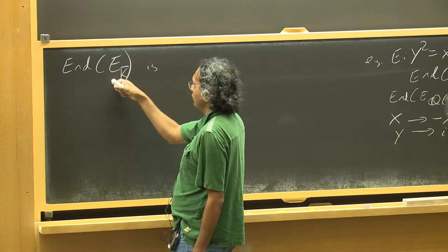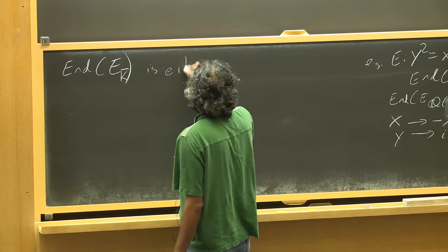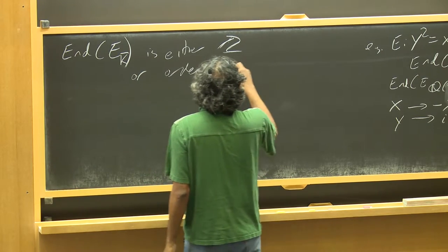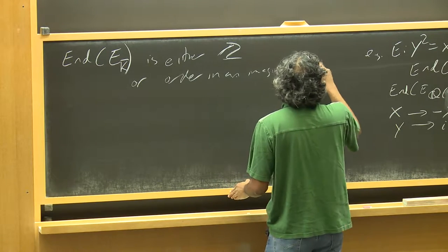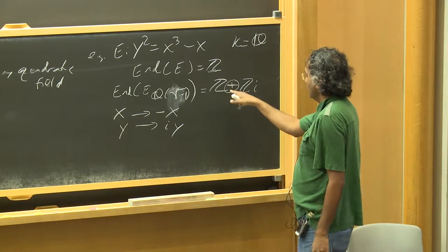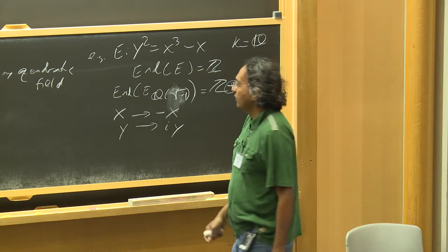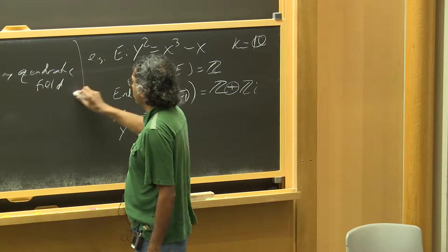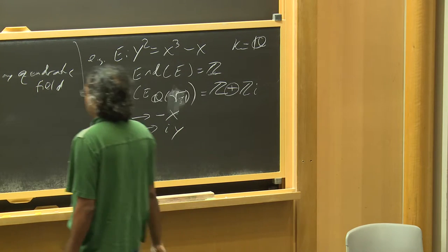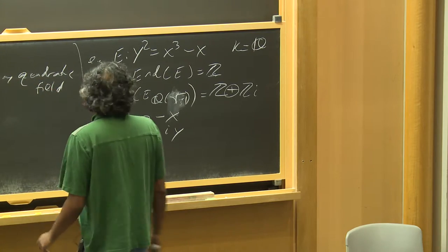These structures can always be realized over the algebraic closure — you don't need a transcendental extension. In general, this endomorphism ring is either the ring of integers ℤ, or an order in an imaginary quadratic field. For instance, it could be the full ring of integers in some imaginary quadratic field, or something smaller like the subring generated by 5i. There's a third option that can occur in characteristic p, which I won't encounter here since k is a number field of characteristic zero.